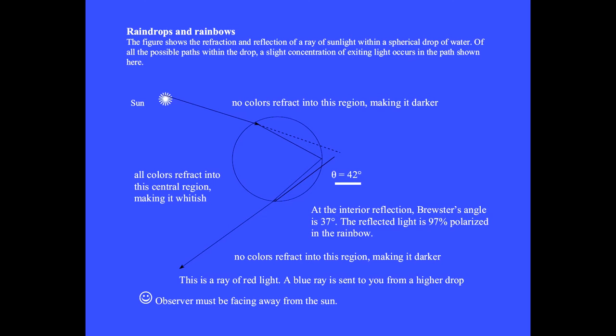There's a 42 degree angle between the sun, the water drop, and you. To see a rainbow, the sun is always at your back. We now shine light onto this sphere of water to make a rainbow.